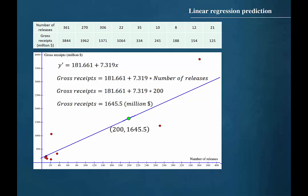The predicted correlation of 200 new movie releases and $1,645.5 million in gross receipts is represented by the point (200, 1645.5) that lies on the regression line.